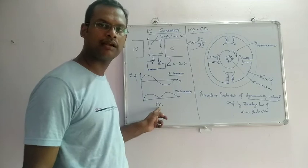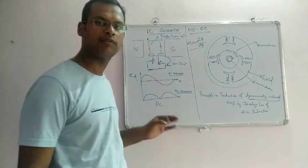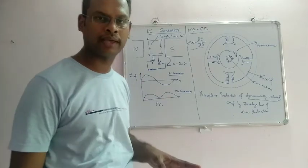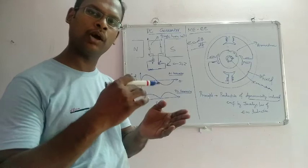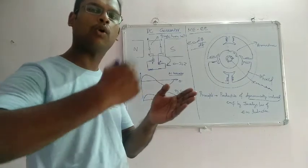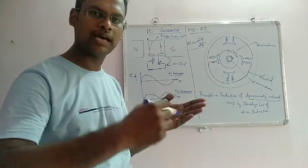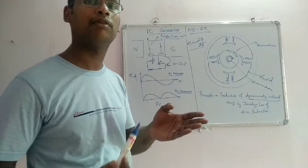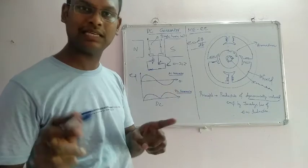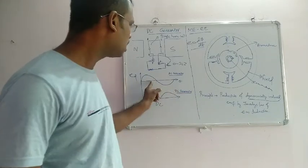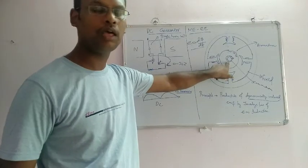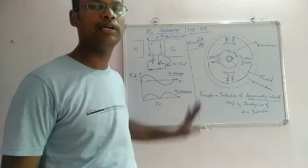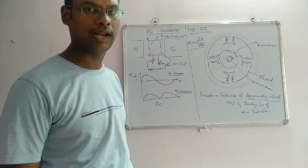That is the DC generator working principle: the working principle is Faraday's law of electromagnetic induction. A coil is placed in a magnetic field, the coil rotates, and an AC EMF is produced. The commutator converts this EMF to DC. That is the DC generator working principle.